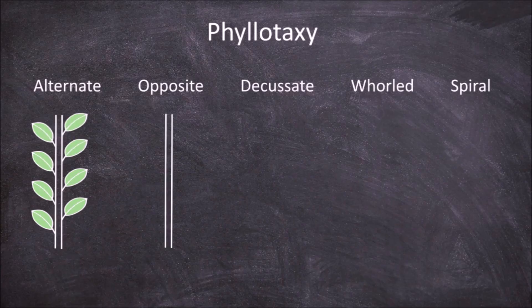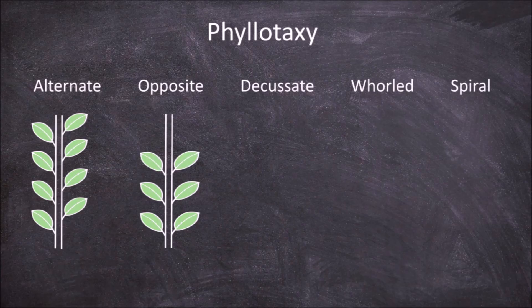If a plant has opposite phyllotaxy, the leaves are also found on nodes on each side of the stem. The leaves are found opposite to one another going up the stem.